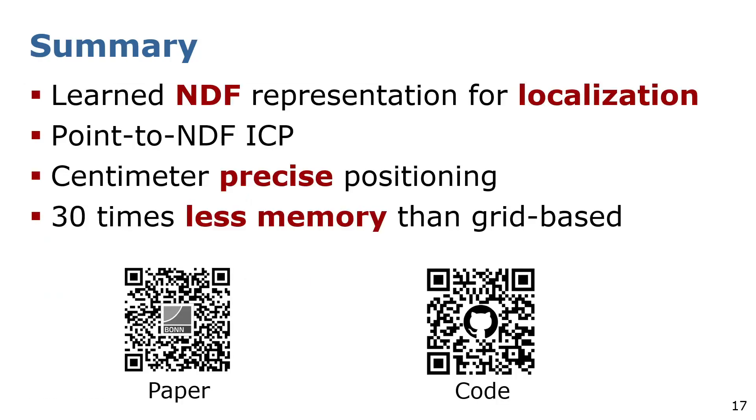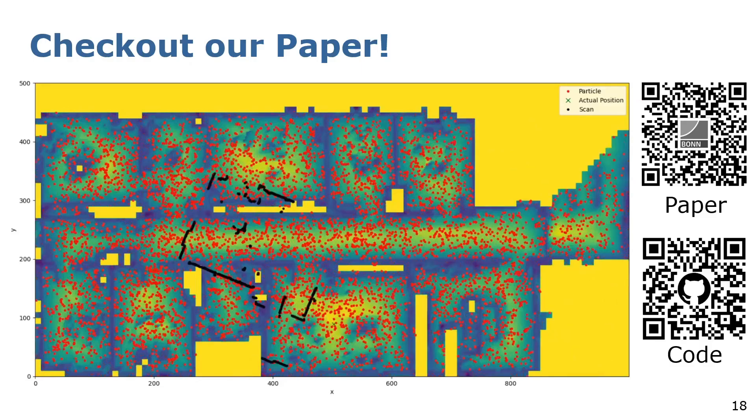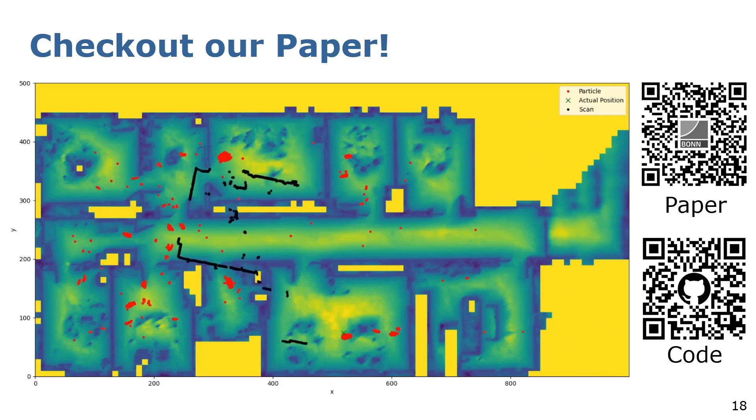In this work, we have investigated how to learn a neural distance field from point clouds that can later be used for localization. We developed a point-to-neural-distance-field-based ICP to register scans to our neural distance field. Our approach can achieve centimeter-precise positioning while consuming 30 times less memory than grid-based approaches. Now, we have only talked about 3D scan registration, but if you are also interested in learning how to use a neural distance field for Monte Carlo localization in an indoor environment, then please check out our paper or GitHub repository. Thank you very much for your attention.